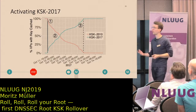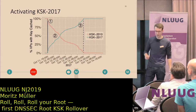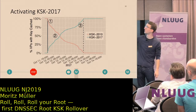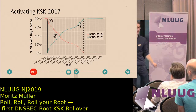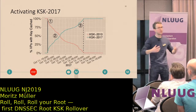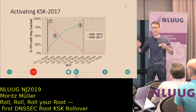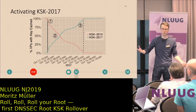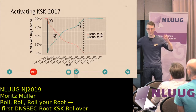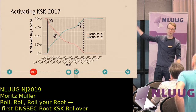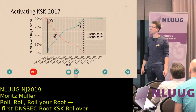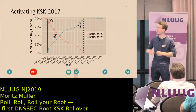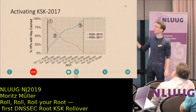For the question of when resolvers actually notice the rollover: in this figure you can see resolvers that see the new key set versus the old key set in the root zone. Roughly after 8 hours you can see these two lines crossing, meaning roughly 50% of monitored resolvers see the new key being used. This is the critical point — resolvers without the new key would fail validation and return error codes to clients. The DNS community was watching this line very closely.